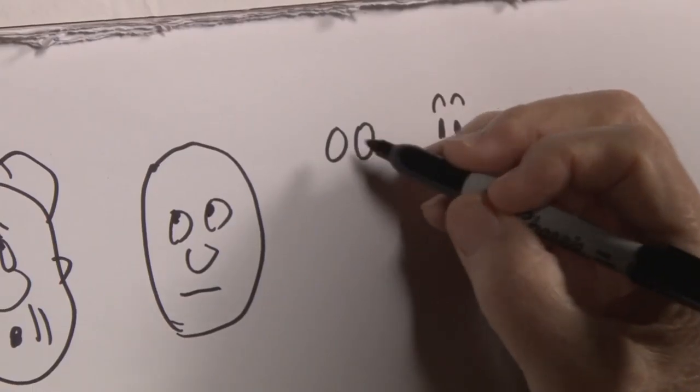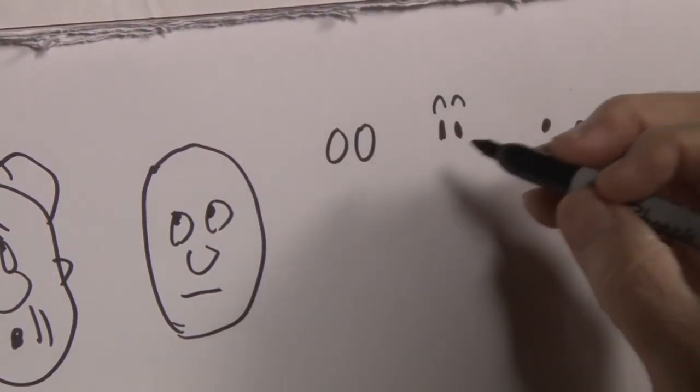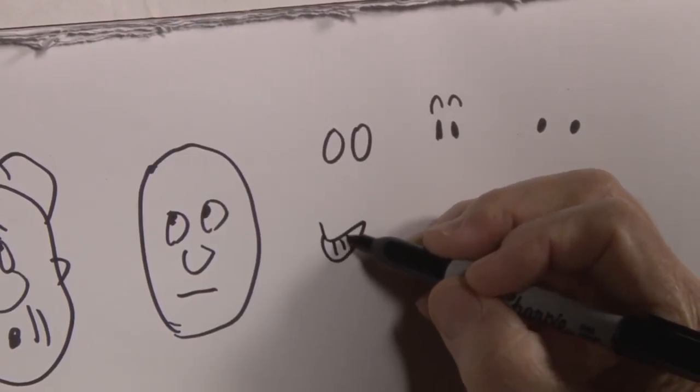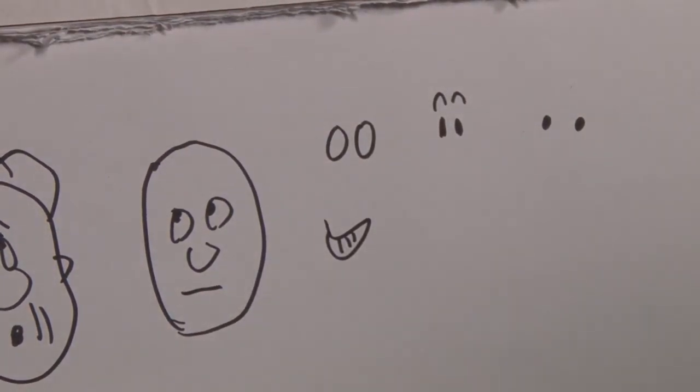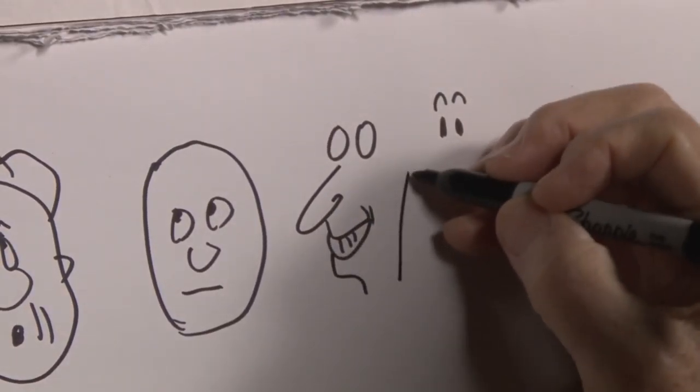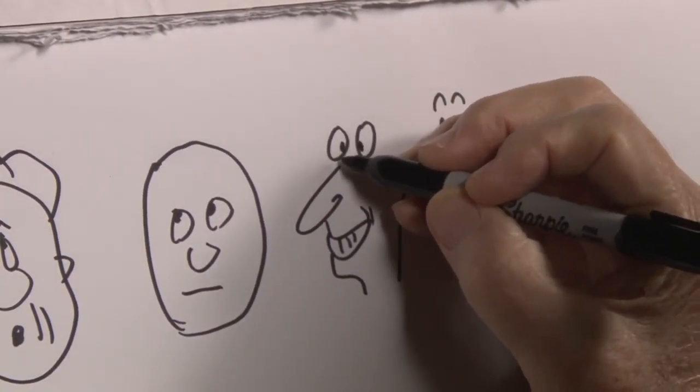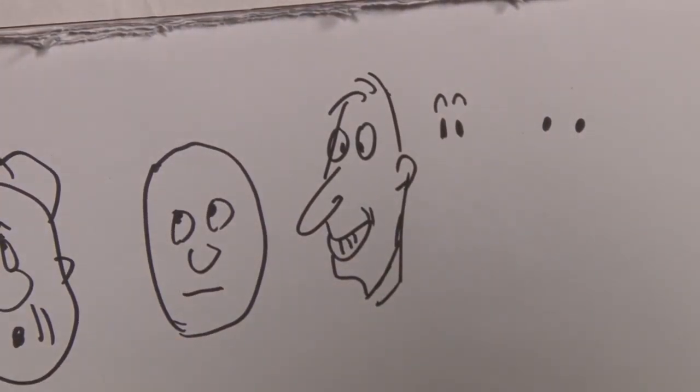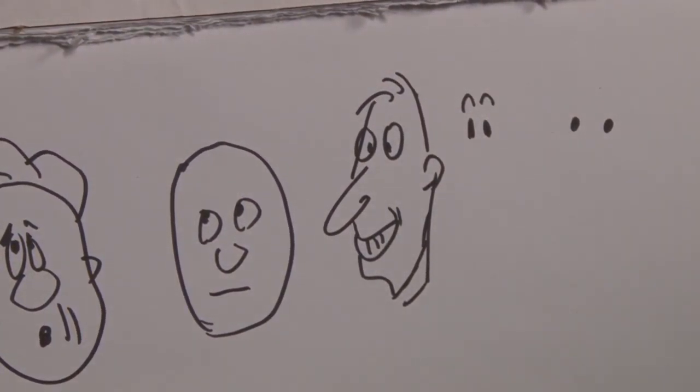And not only can you have different kinds of eyes, you can have different kinds of mouths like this rather toothy grin on this person. Still a funny character even if you don't follow the original simple plan.